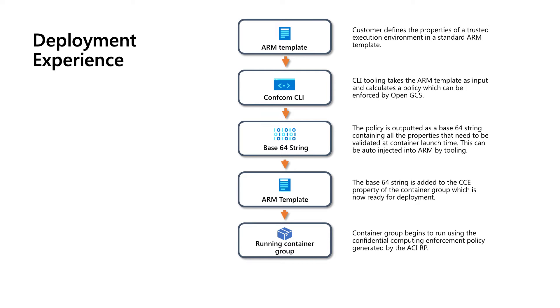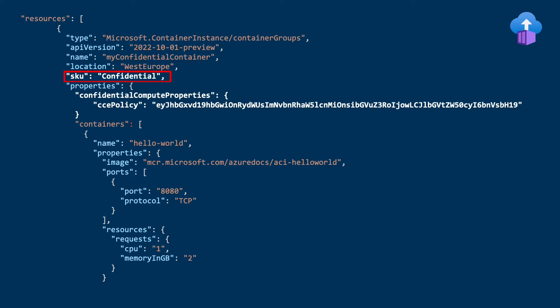Look at the deployment experience here. You have an ARM template that defines the properties of a trusted execution environment. We have introduced a tool called ConfCom that takes in this ARM template and calculates a fully auditable policy that can be included in the ARM template during deployment time, and this gets deployed into the container group. We have introduced the confidential SKU into the ACI product, and the confidential computing property that enforces what can be run within a container group is included as part of the deployment template.